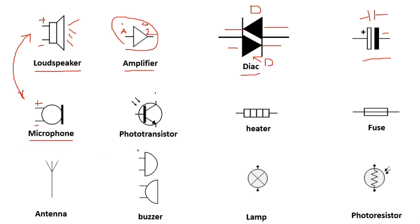Here we have the phototransistor. As you see, we have two arrows in this direction because this is a phototransistor — a transistor that receives light at its base. We have the base, the collector, and the emitter. The activating signal for the phototransistor is not a voltage or current — it is light.